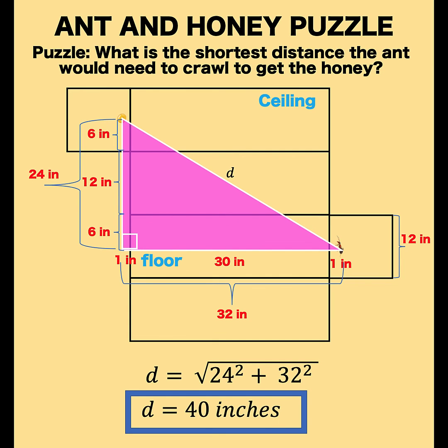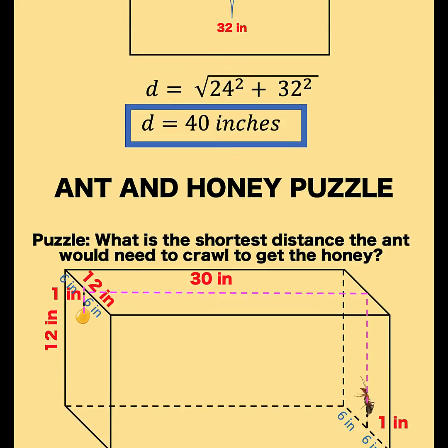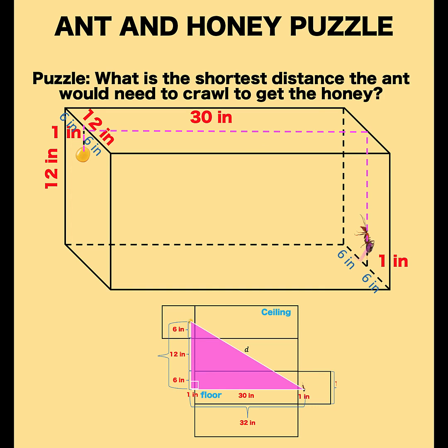Going back to the three-dimensional rendering of the box, this is the path that the ant has to crawl in order to get to the honey, and the distance is 40 inches. Thank you very much, and we hope to see you again in our next video. Bye for now.